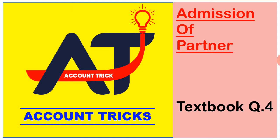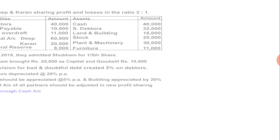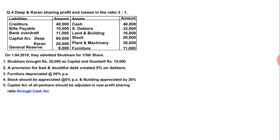Students, today we are going to see textbook question number four on admission of partner. Deep and Karan are partners sharing profit and losses in the ratio 3 to 1. First of all, see the fifth adjustment, because from the fifth adjustment we will know the new ratio, and then we will start solving the problem in a normal manner.